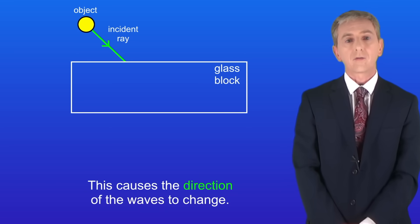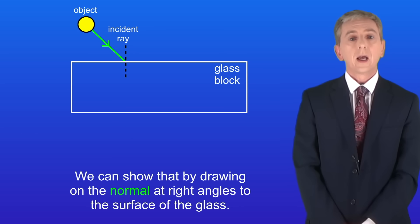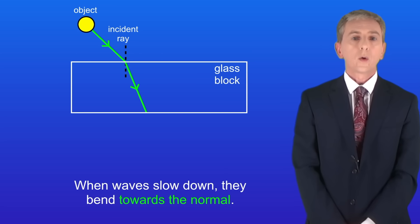This causes the direction of the waves to change and we can show that by drawing the normal at right angles to the surface of the glass like this. When waves slow down they bend towards the normal.